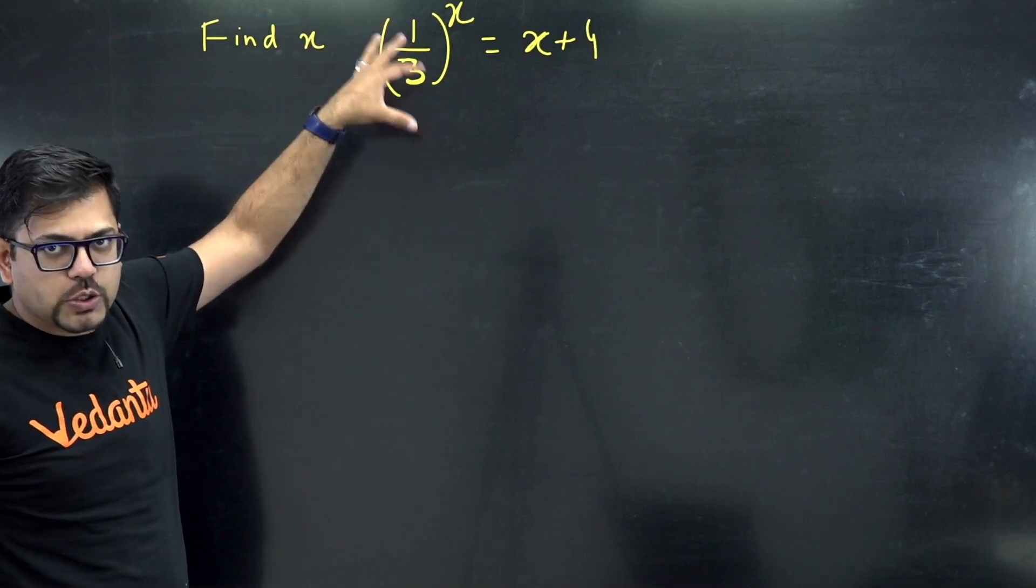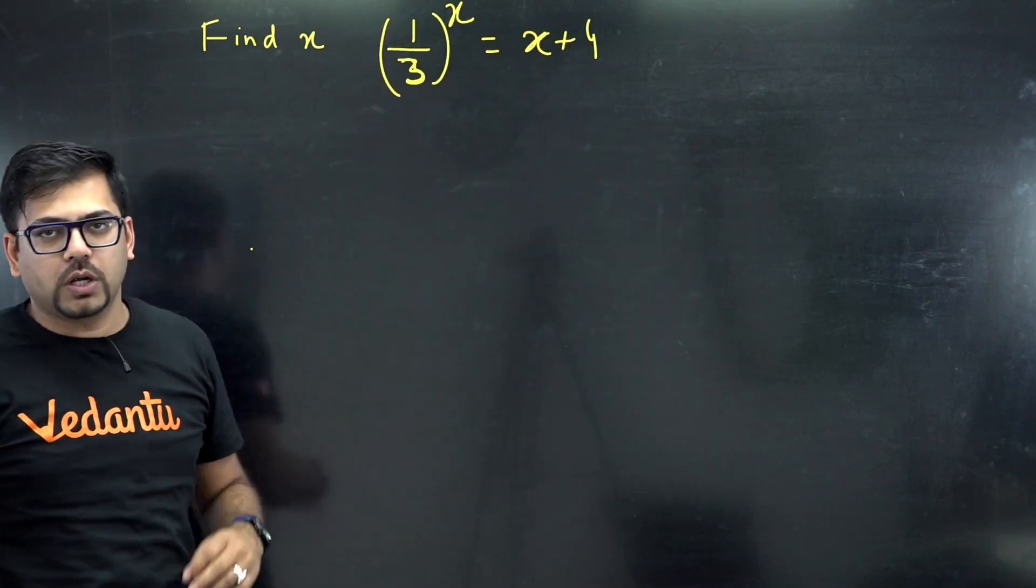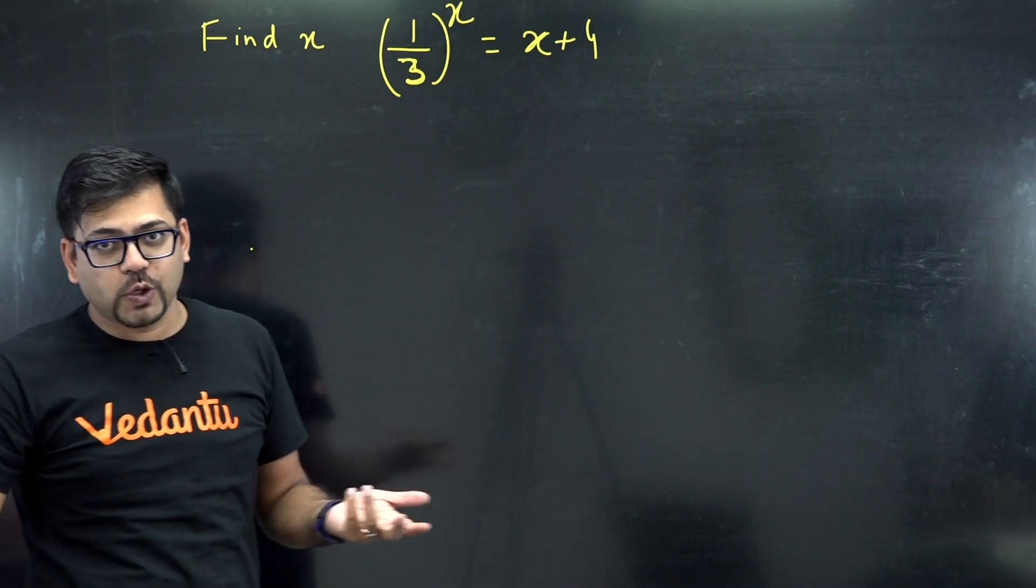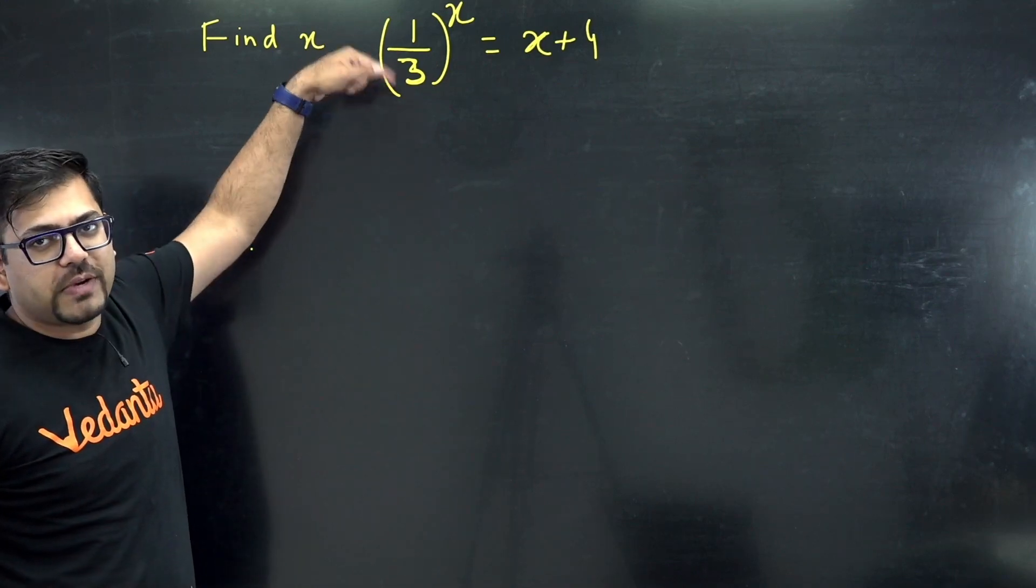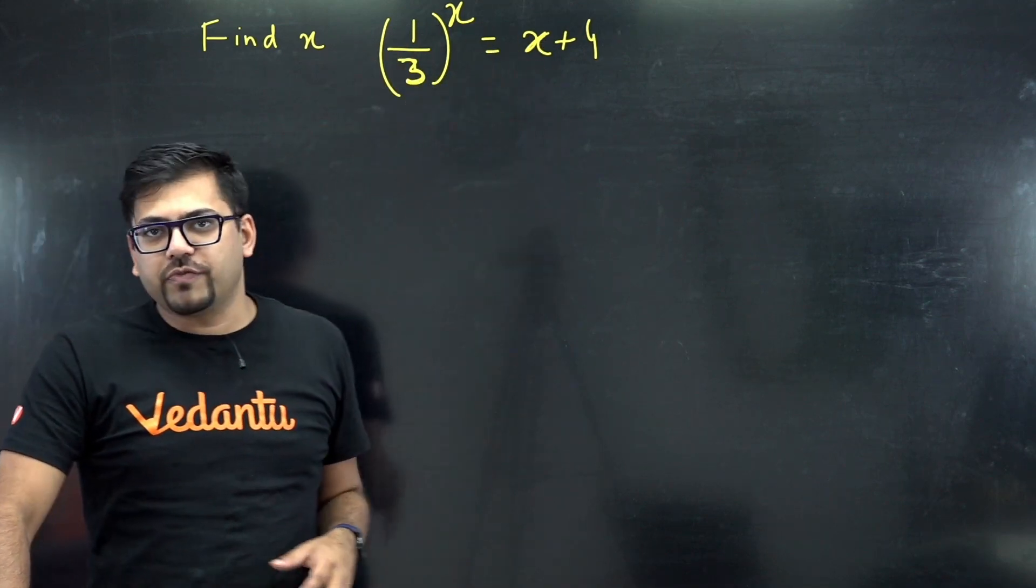Here if you put 24 by 5, it is solvable but not by normal methods. Rather you have to use a computer or website or calculators for solving that question. So that was not the question. The original question is 1 by 3 raised to power x equals to x plus 4.